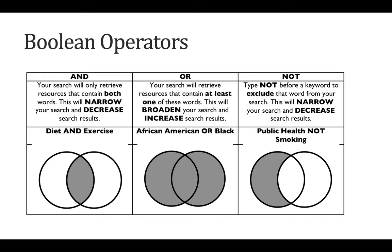The Boolean operator OR is a good way to broaden and increase your search results, particularly when including different terms for the same concept or population. For example, using African American OR Black ensures we pull back results regardless of whether authors use African American only, Black only, or both. So all the relevant results are retrieved.